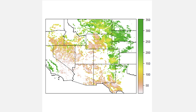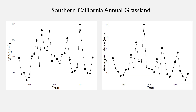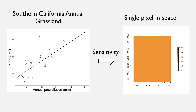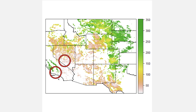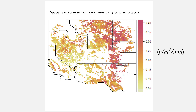What we can do is go into space and extract data from a single pixel — for example, from the Southern California annual region. In the same way as with plot-level data, we can get a time series of net primary productivity and link it with annual precipitation data to understand how sensitive net primary productivity is to temporal variation in precipitation at that location. We can then map that onto a pixel in space and begin to compare how that relationship differs across different vegetation types, such as the cold deserts. Doing this for tens of thousands of pixels gives us an understanding of spatial variability in dryland sensitivity to temporal variability in precipitation.